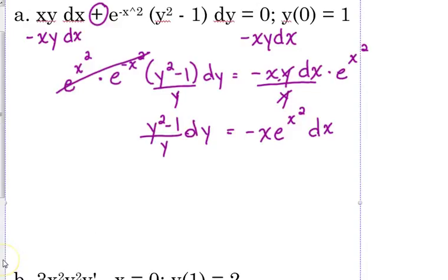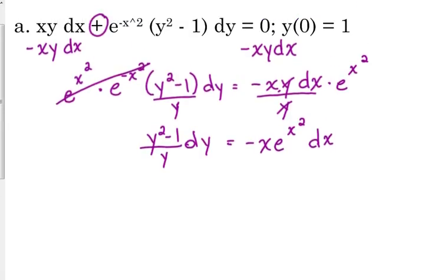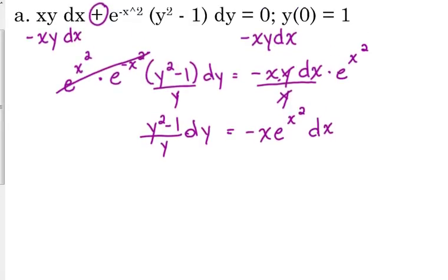We have fully separated our variables. You move it to the other side by multiplying by e to the positive x squared because x squared plus negative x squared is zero, and e to the zero is one — that's what cancels it. You could also look at it as dividing by e to the negative x squared, then flipping the negative exponent to move it to the numerator.